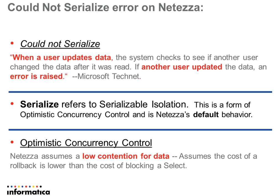By default, Netezza uses the serializable isolation level, which is a form of optimistic concurrency control that doesn't use locks. Netezza has been designed for query performance, and in most cases, Netezza users are only given read-only access to run select statements, or at least we don't expect them to be locking in to change data.